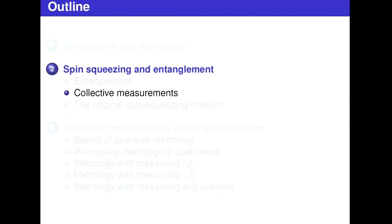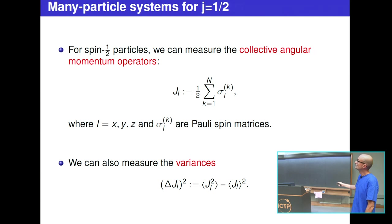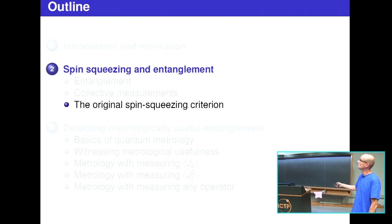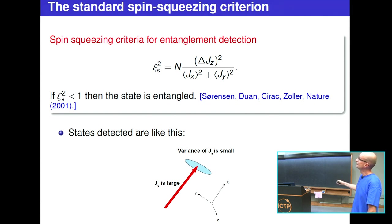We can also think about what can be measured in a many-particle system. We cannot measure anything because we cannot access the particles individually. What we can measure are the collective angular momentum components — their expectation values and variances. These are the typical quantities you can measure in an ensemble of one million spin-half atoms. In this context, the spin-squeezing criterion was developed, which detects entanglement in a very simple way: for every separable state, the spin-squeezing parameter is equal to or larger than one.